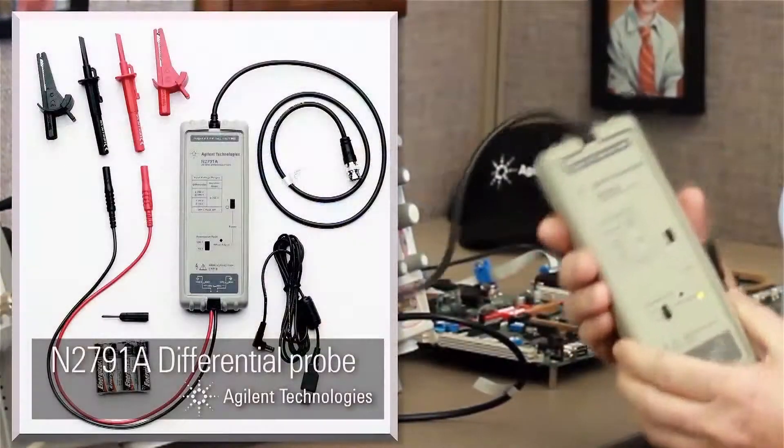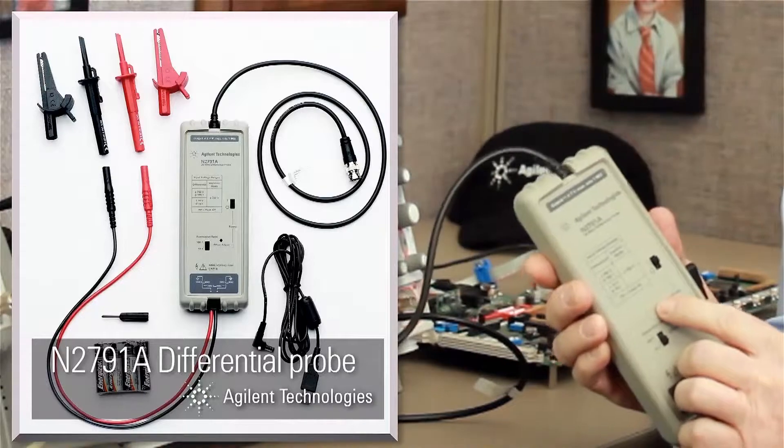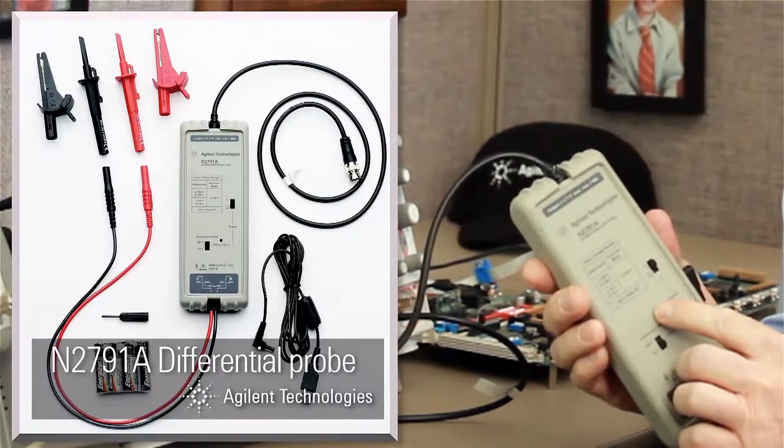In this short video, I will show you how to set up the Agilent 3000 X-Series oscilloscope to trigger on and decode a CAN serial bus. The first step is to probe the differential CAN bus. Agilent recommends using the N2791A 25 MHz differential active probe. Let's begin.